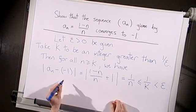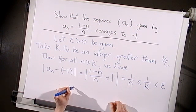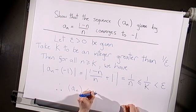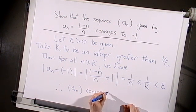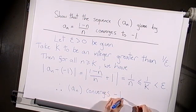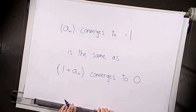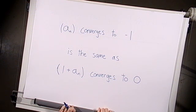Therefore, we've shown that the definition of convergence to minus 1 is satisfied, and we can conclude that the sequence aₙ does indeed converge to minus 1. An interesting thing to note here is that showing that aₙ converges to minus 1 is the same thing as showing that the sequence 1 plus aₙ converges to 0. The equivalence of these two statements is a consequence of our definition of convergence.